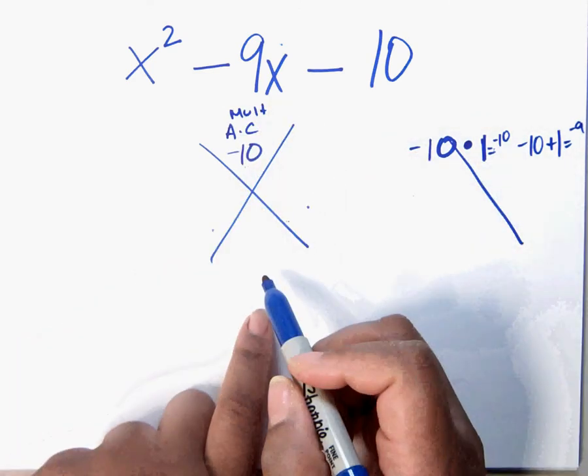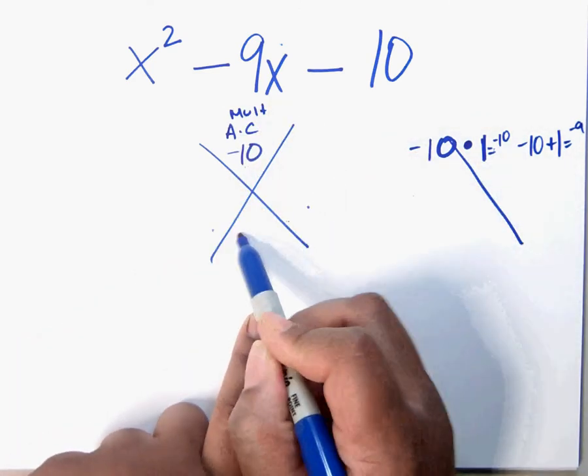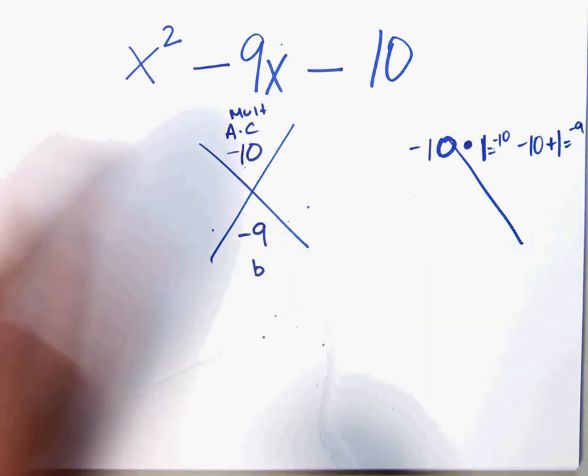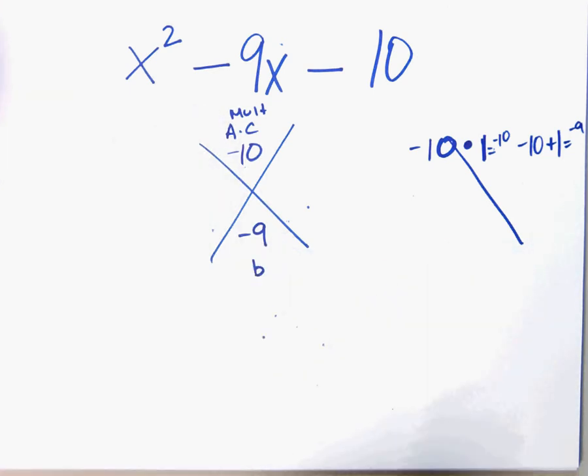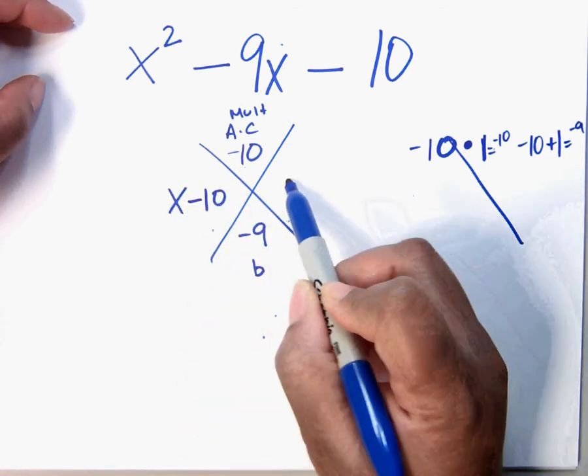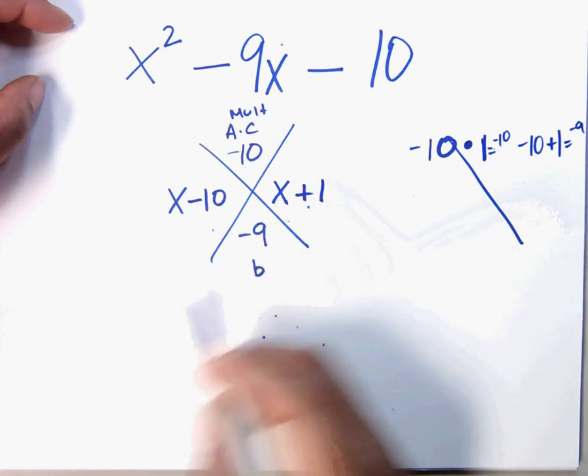And then what? Negative 9. Okay, and how did you get that? That's the B. That's the B. Good job. So now what? X minus 10. X minus 10. X plus 1. X plus 1.